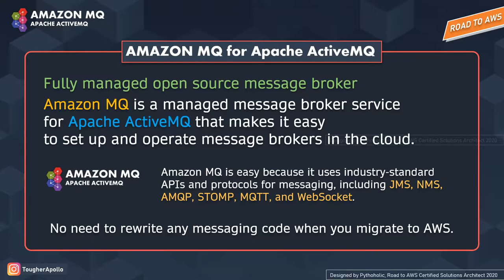You can monitor logs and metrics and generate alarms about potential issues to scale your resources. When it comes to connection, if you have been using ActiveMQ, you should be rest assured when integrating it with Amazon MQ. Amazon MQ uses standard APIs and protocols for messaging, including Java Messaging Service, NMS, AMQP (Asynchronous Message Queue Protocol), STOMP (Simple Text-Oriented Messaging Protocol), MQTT (Message Queuing Telemetry Transport), and WebSocket. Whatever broker code, consumer code, or producer code you've already written, you don't need to change it.